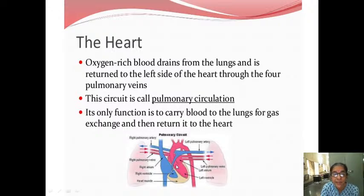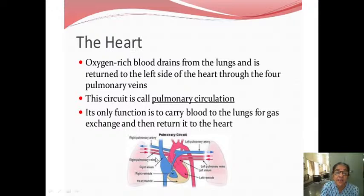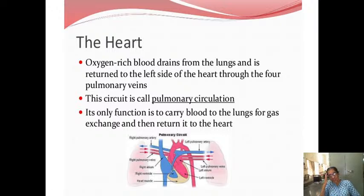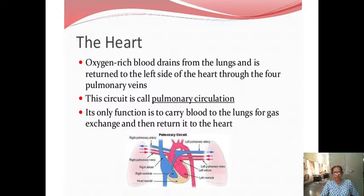From the left ventricle, blood goes into the aorta and all over the body, giving away oxygen and collecting carbon dioxide, then going into the superior and inferior vena cava which enter the right atrium and right ventricle. This circuit is called pulmonary circulation, whose only function is to carry blood to the lungs for gas exchange and then return it to the heart.